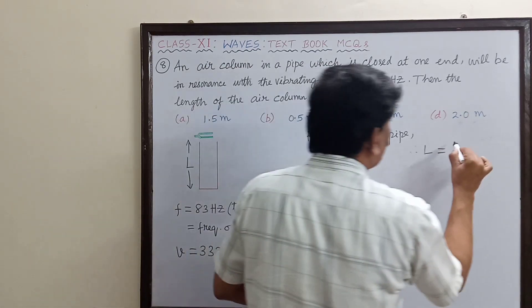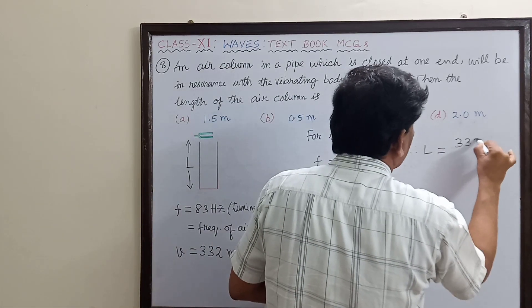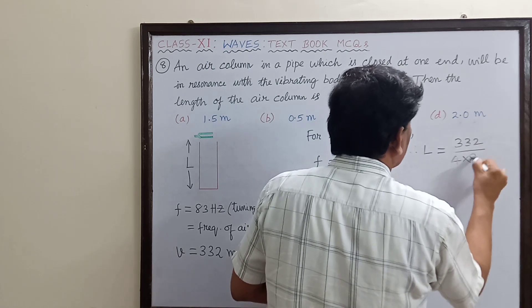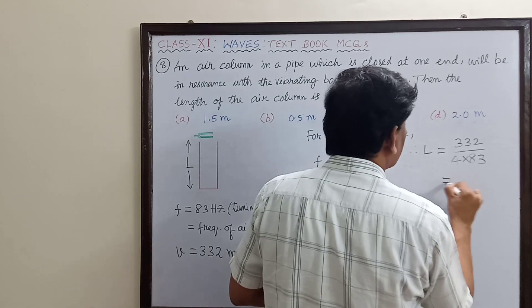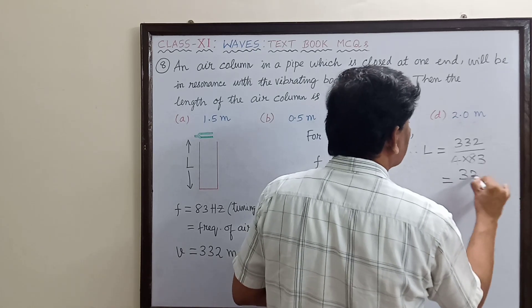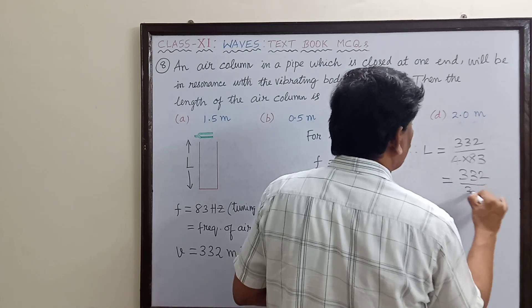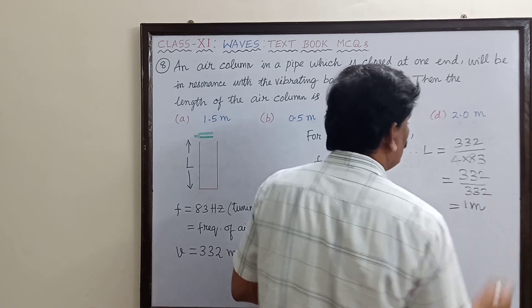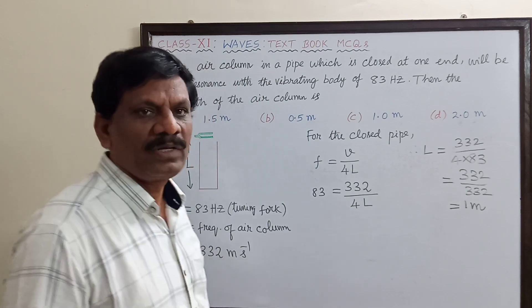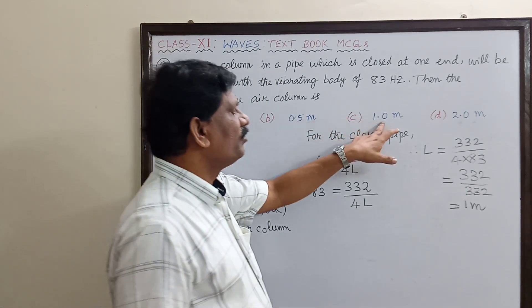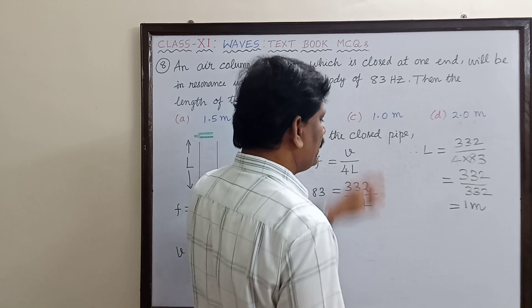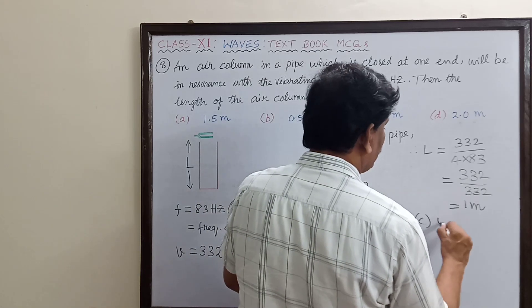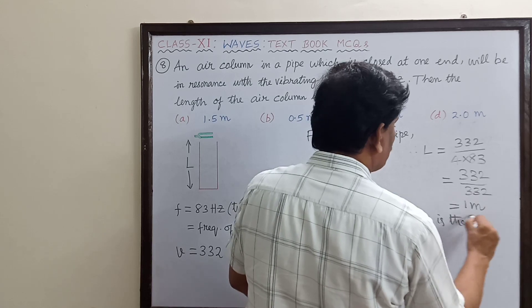Therefore L equals 332 divided by 4 times 83, which gives 332 divided by 332, equal to 1 meter. So the correct answer is option C: 1.0 meter.